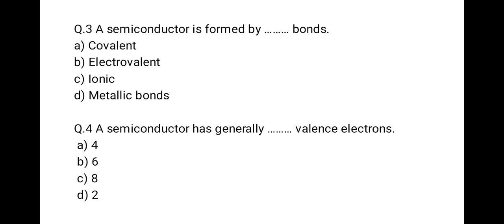The third question is: a semiconductor is formed by what type of bonds? The correct option is covalent bonds, because a covalent bond is formed by the sharing of electrons. Semiconductors are also formed by sharing of electrons, so covalent bonds are present in semiconductors.